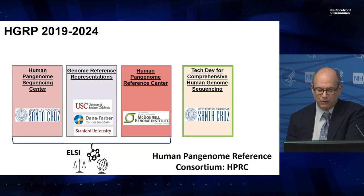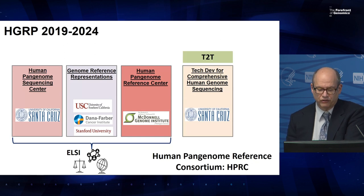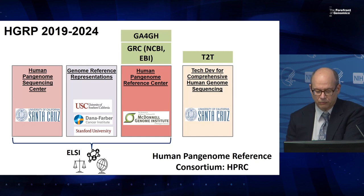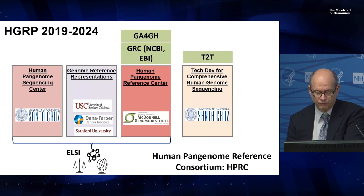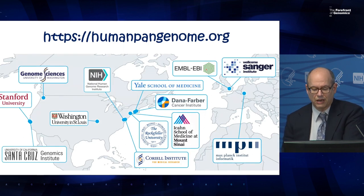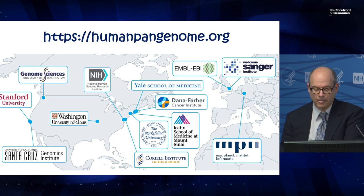The grantees have also established important connections needed to make their effort work for data production. There is an active collaboration with the Telomere-to-Telomere Consortium for improving the state-of-the-art and producing very high-quality genome assemblies. The grantees also work with GA4GH to help establish international collaborations and collaborate directly with the Genome Reference Consortium, EBI, NCBI, ANVIL, and others to help deliver the resource through multiple activities including annotation, delivery to the community, and data availability. The HPRC also includes sub-awards and collaborations with investigators from Stanford, University of Washington, Coriell, Dana-Farber, Sinai, EMBL, Sanger, and the Max Planck Institute, as well as associations with a number of associate members.